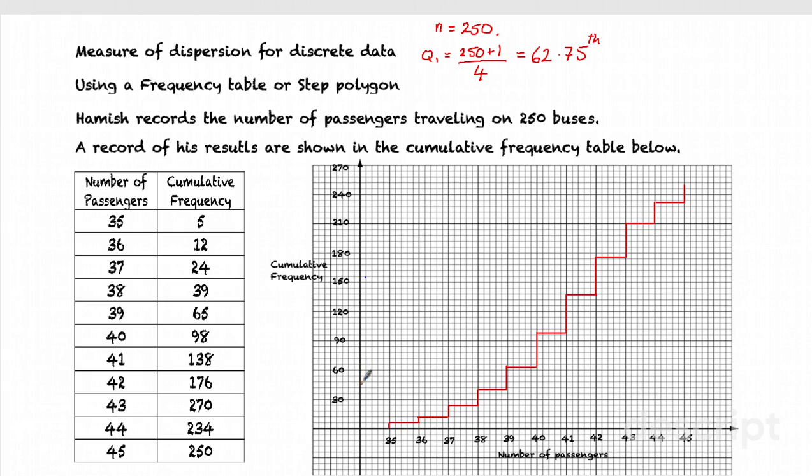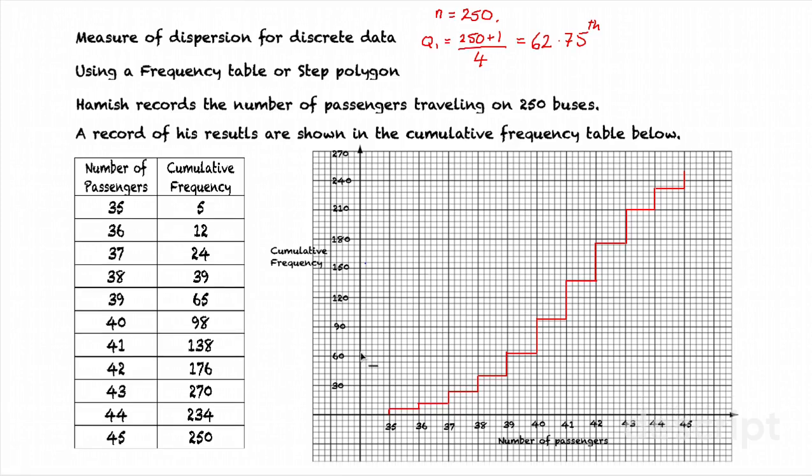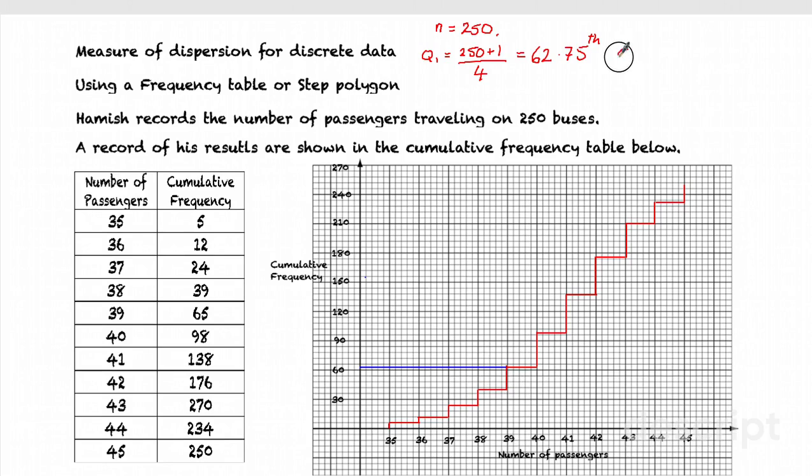And then I can read that value. So my 62. Again, it's quite difficult on this scale. But it's going to be just above 60. I go across and I reach the graph here at 39. I know that Q1 is 39.